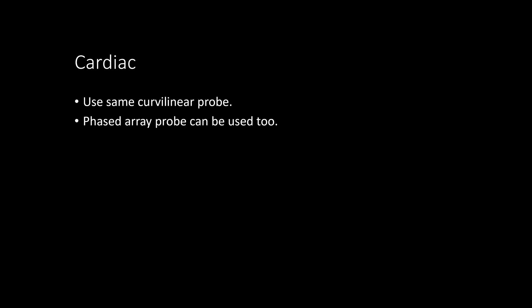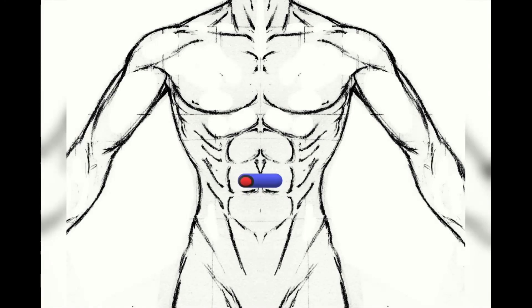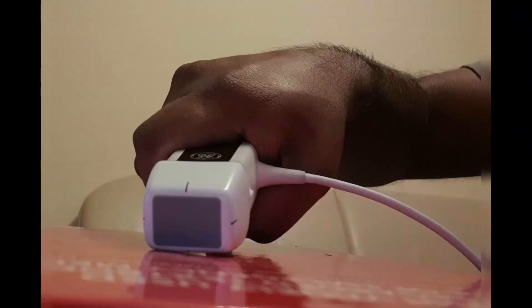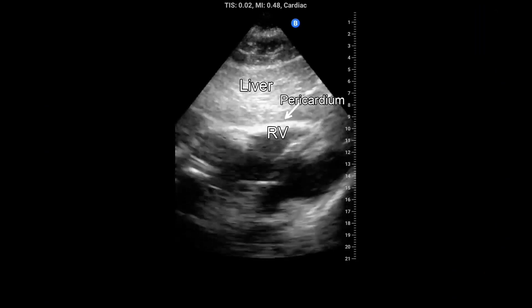For cardiac views, use the same curvilinear probe; a phased array probe can be used too. The four-chamber subxiphoid view is performed with the transducer oriented transversely in the subcostal region and the indicator directed to the patient's right. The transducer should be held almost parallel to the skin of the anterior torso, pointed just to the left of the sternum toward the patient's head. Gas in the stomach frequently obscures views of the heart, but this can be minimized by using the left lobe of the liver as an acoustic window.